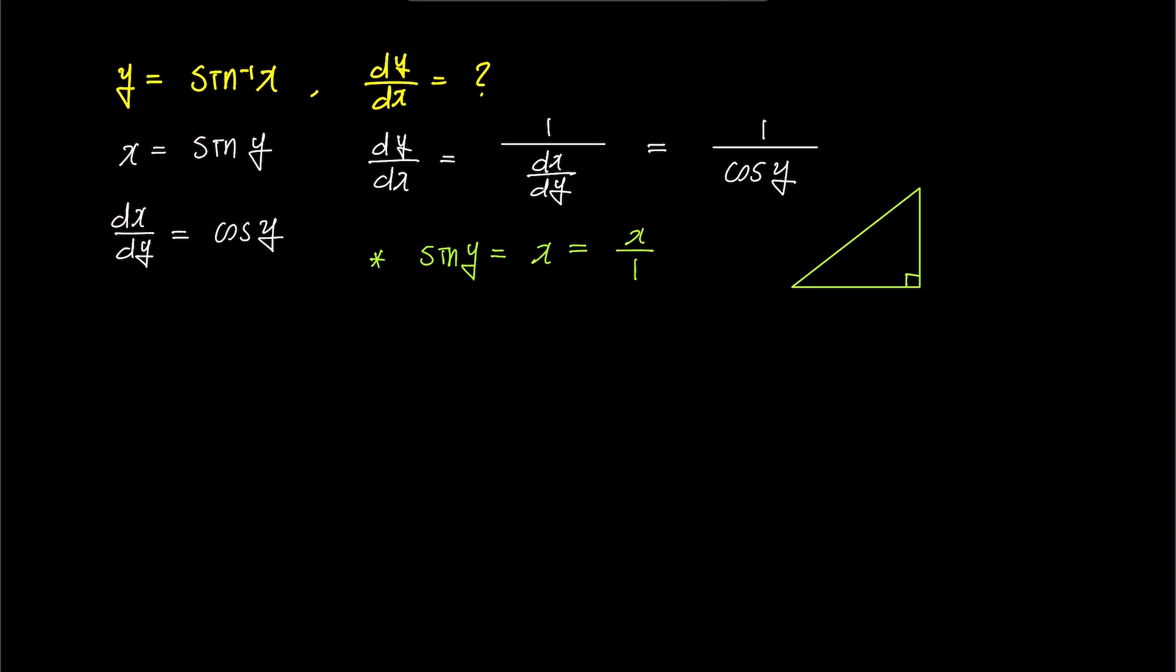Visualizing this with a right triangle for sine y is x over 1, where y becomes an angle, and the opposite side is x, and the hypotenuse is 1.